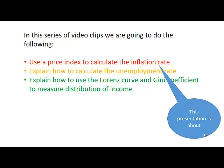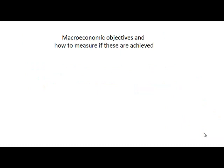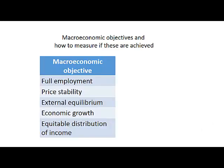This presentation is about using a price index to calculate the inflation rate. First we look at macroeconomic objectives and how to measure if these are achieved. The five macroeconomic objectives are full employment, price stability, external equilibrium, economic growth, and an equitable distribution of income. Policy will be aimed to achieve these five objectives.